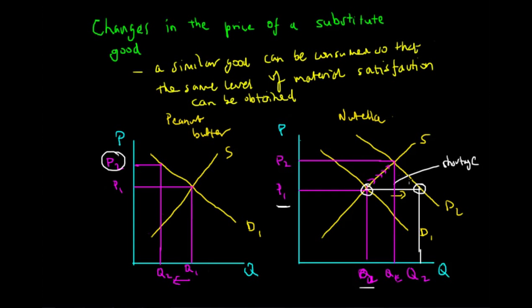Because price has increased, there will be a contraction in demand, and a new equilibrium is reached at E2 where buyers and suppliers are happy once again. So as we can see, as the price of a substitute good increases from P1 to P2, the demand curve of the other substitute good shifts to the right from D1 to D2. The converse also holds true.